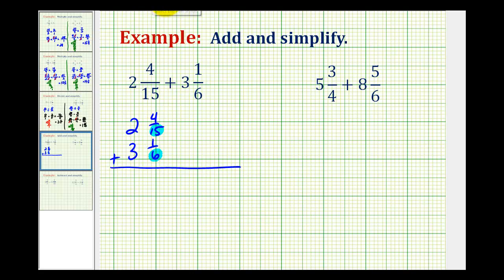So multiply this first fraction by two over two. Notice how two over two is like multiplying by one. And if we multiply six by five and the numerator by five, notice how both fractions will have a denominator of thirty.